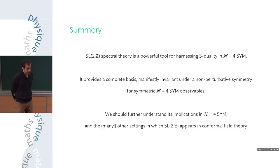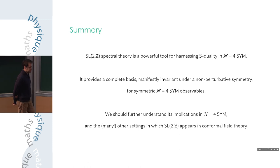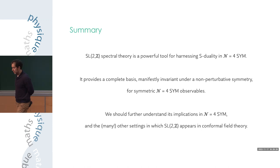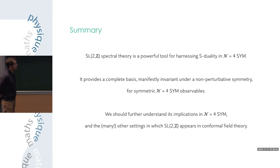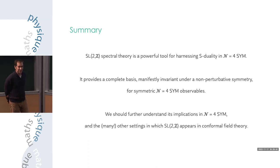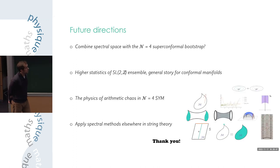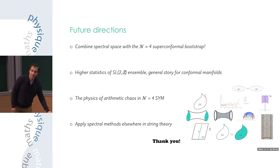To summarize: SL(2,Z) spectral theory is a potent tool for studying S-duality in N=4 super Yang-Mills. It provides a complete basis which is moreover manifestly invariant under this non-perturbative symmetry for SL(2,Z) invariant N=4 observables. We should try to understand its implications further, not in N=4 alone but also in other settings where SL(2,Z) appears. Thanks.